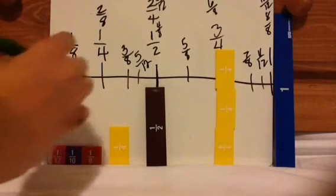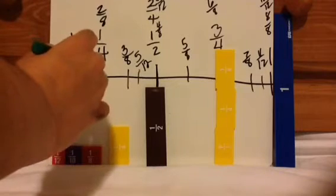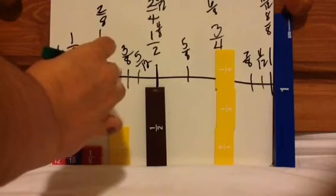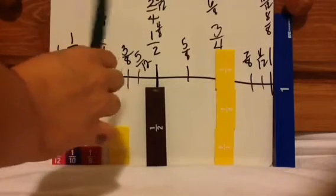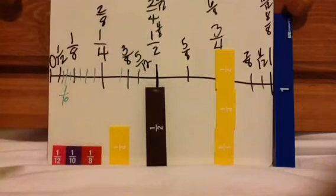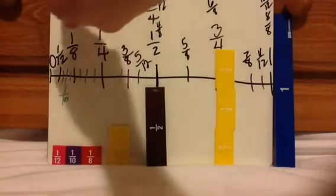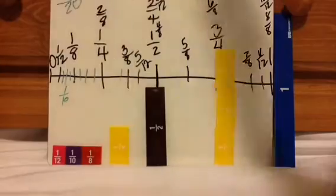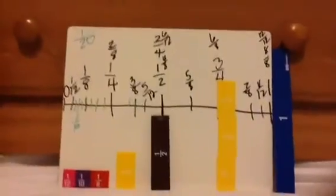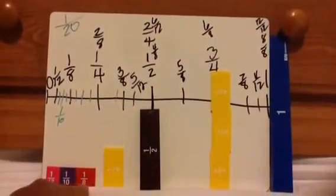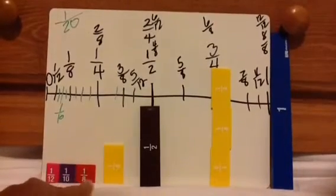1 eleventh is over there. This could be 1 seventh, 1 sixth, 1 fifth, 1 fourth. Around here could be 1 fifth, around here could be 1 third, and then 1 half. So the bigger the denominator — if there's a 1 as the numerator and the denominator is something like 20 — 1 twentieth is a very, very tiny piece. Just look: 1 half, 1 fourth, 1 eighth, 1 tenth, 1 twelfth. It's getting smaller.